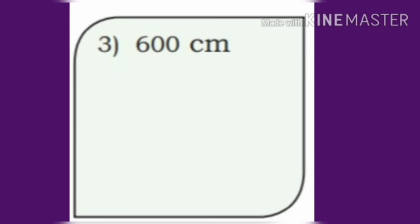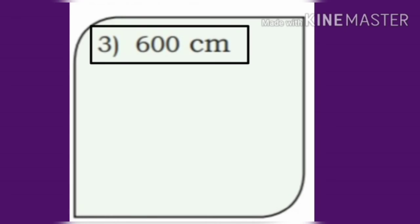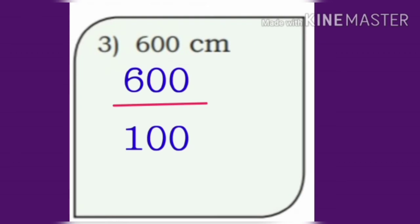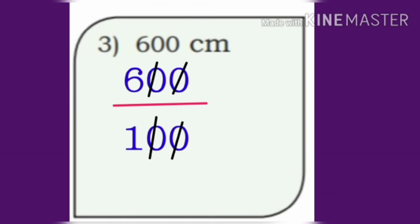Now, third one: 600 centimeter. Let us divide 600 by 100. Cancel the zeros on numerator and denominator. We get the answer as 6 meter.